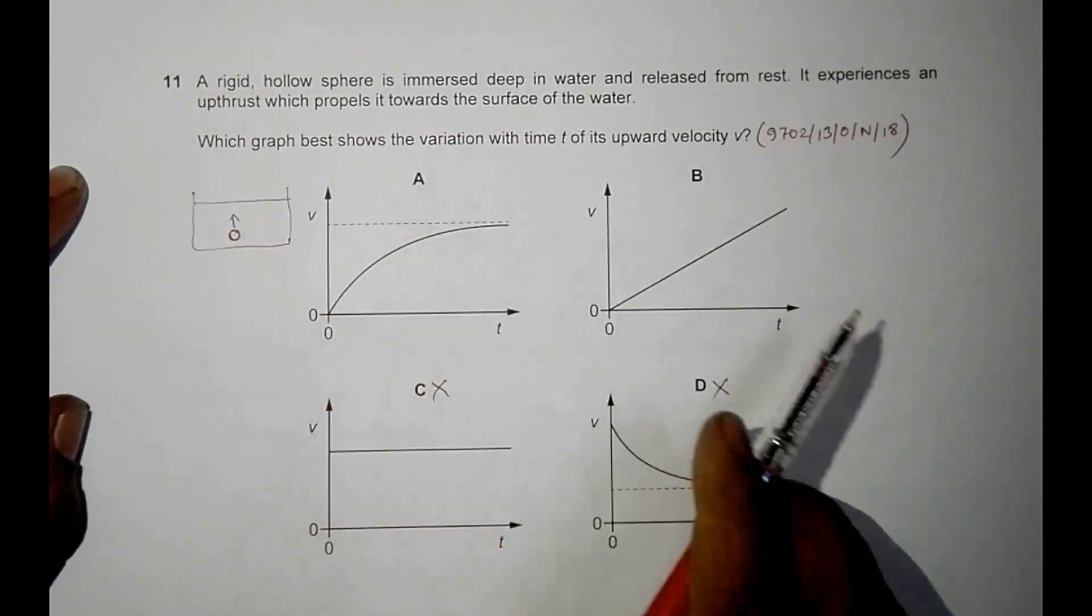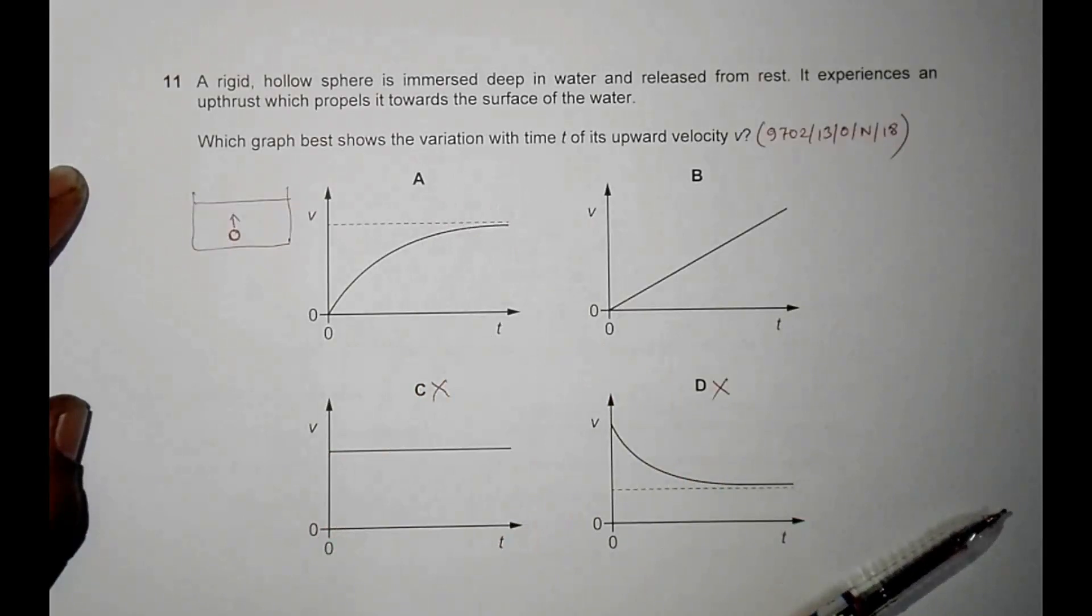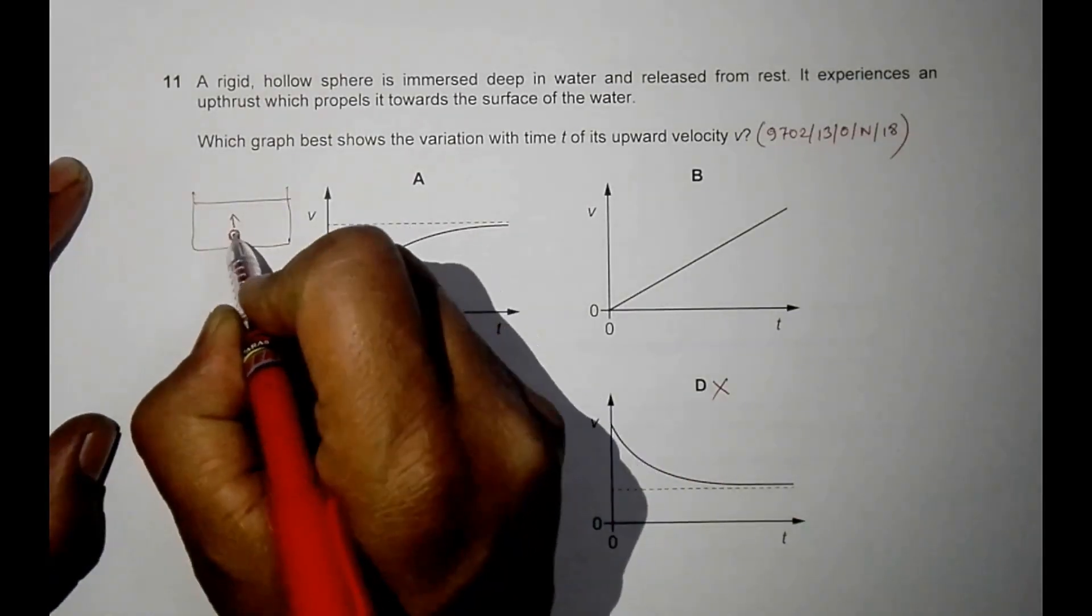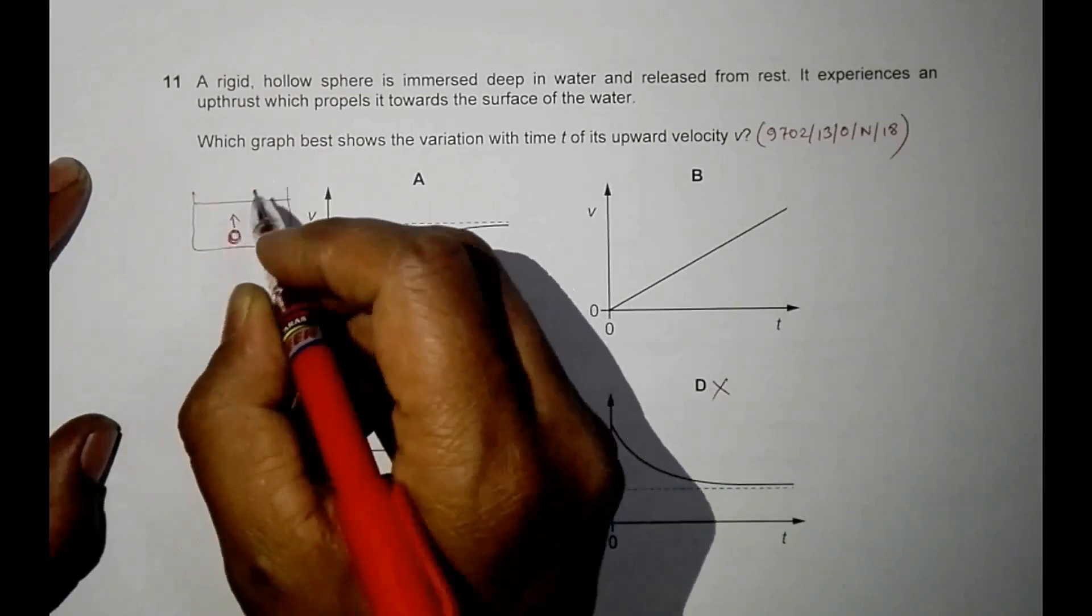Which graph best shows the variation with time T of its upward velocity V? We have to find the way the velocity changes. Let's remember that in the very beginning, since the body is hollow...